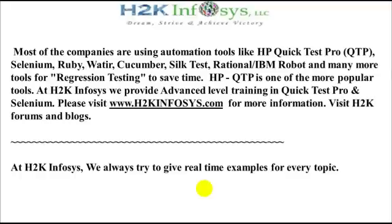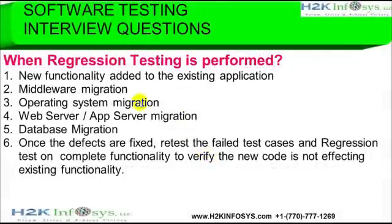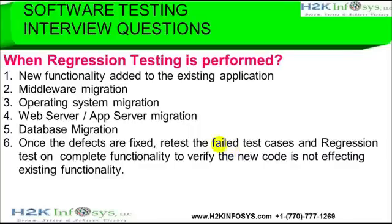You've now watched all the information about real scenarios: how, where, and when to do regression testing, along with the complete architecture of the application. To summarize regression testing: it applies when new functionality is added to an existing application, during middleware migrations, and once defects are fixed. Retest the failed test cases and perform regression testing on functionality that was already working, to verify that code changes are not affecting existing functionality.